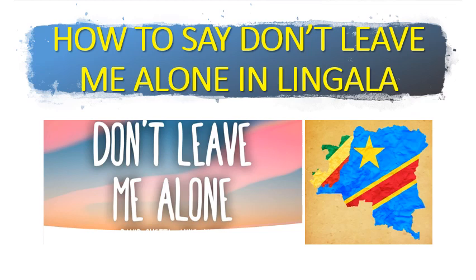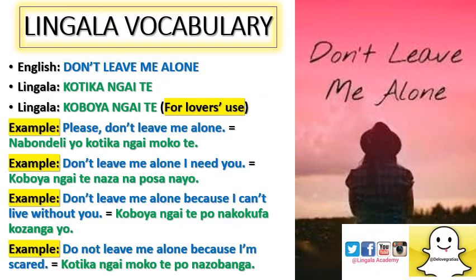'Don't leave me alone' in Lingala has two ways of saying it. The first one is 'kotika ngai te' — used in general for asking people to keep you company or to stay with you. The second one is 'koboya ngai te,' which is used for lovers.